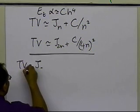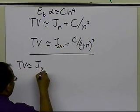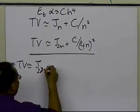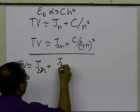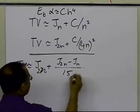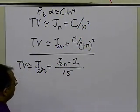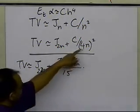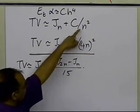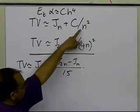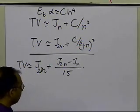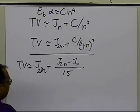You're going to get that the true value is approximately equal to j2n plus (j2n minus jn) divided by 15. The reason why you get 15 is because you have 4 — 4 squared is 16 — and then there's a 1, so 16 minus 1 is 15. That's how we get the 15 here.